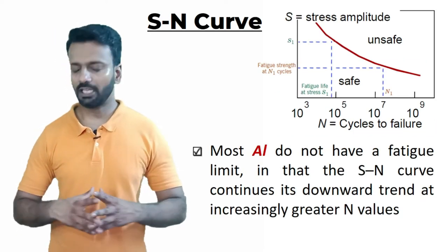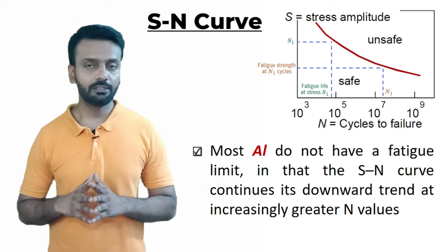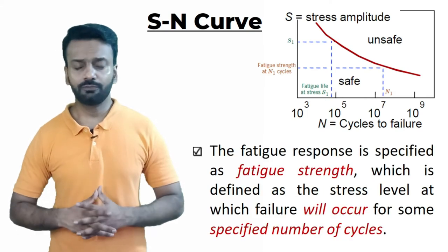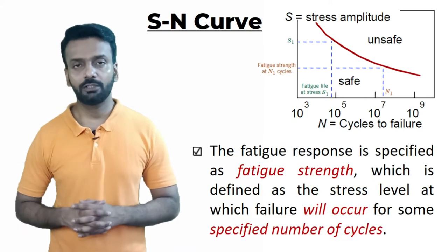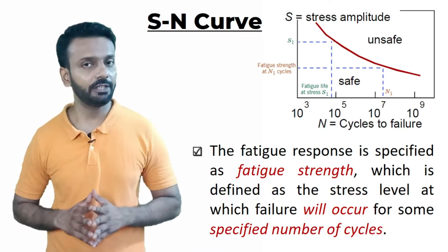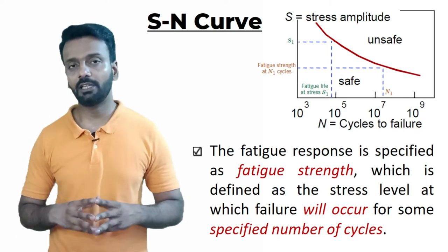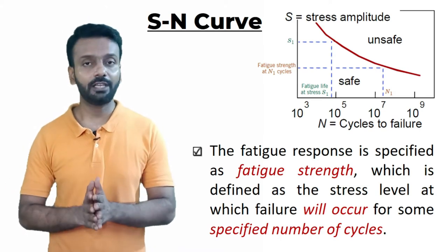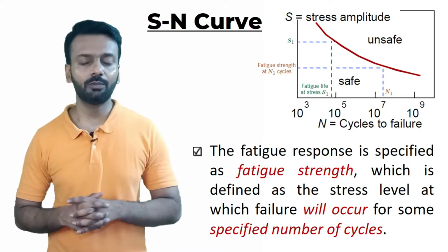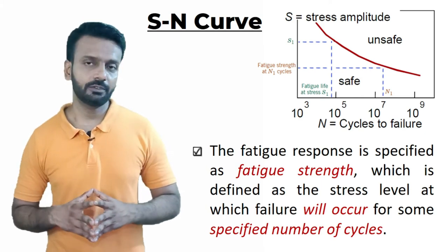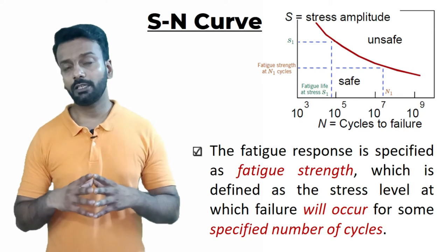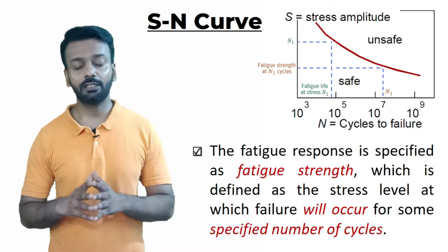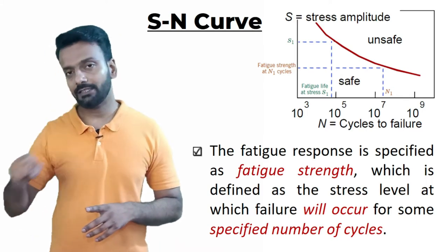Most aluminum alloys do not have a fatigue limit. Rather, the S-N curve keeps dipping as the number of cycles increases. For such materials, we cannot give a fatigue limit; instead, we specify failure in terms of number of cycles. We say that after so many number of cycles the material will fail, depending on the shape of the S-N curve.